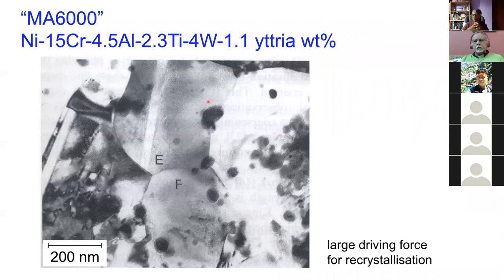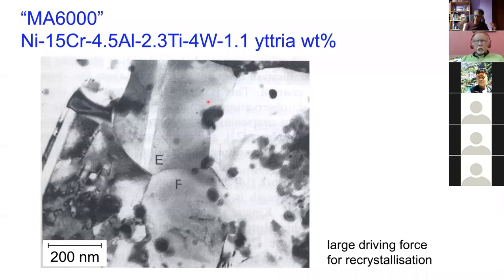When you extrude this material, there is a tendency for the particles to align along the extrusion direction. When recrystallization occurs, the grains are not going to be isotropic. This can be an advantage for creep resistance — you want to grow grains along the stress axis because that reduces grain boundaries normal to the stress where creep damage can occur. We want large grain structures from the recrystallization process.